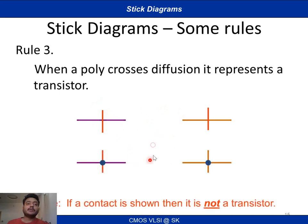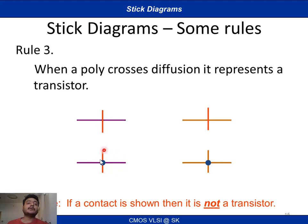If there is a contact shown between polysilicon and substrate, that means it is not a transistor. We will come across this in the context of butting contacts and buried contacts — those details will be discussed later. Just remember: whenever polysilicon is crossed by diffusion, a transistor will be formed; and if any contact is shown, that means it is not a transistor.